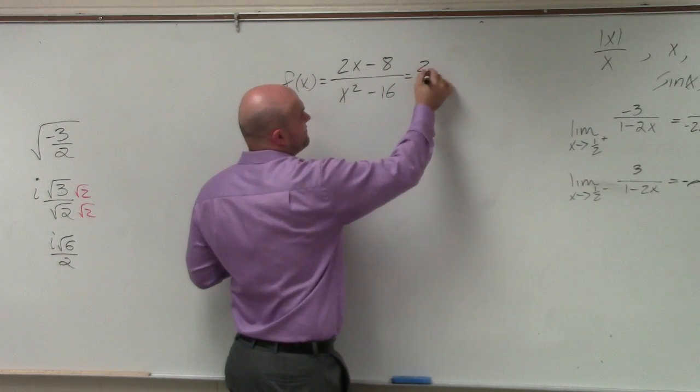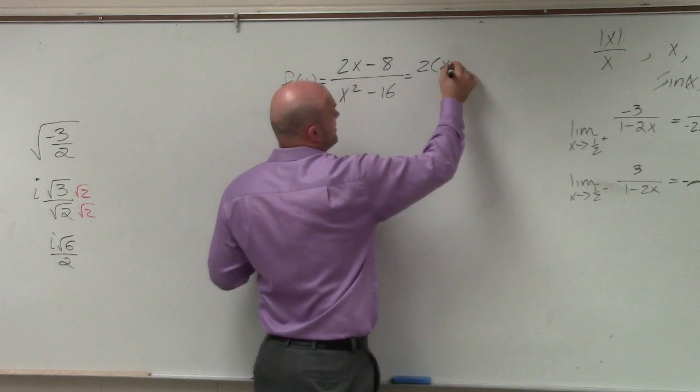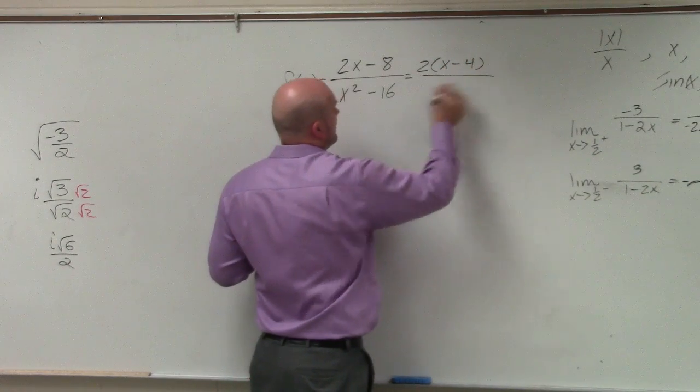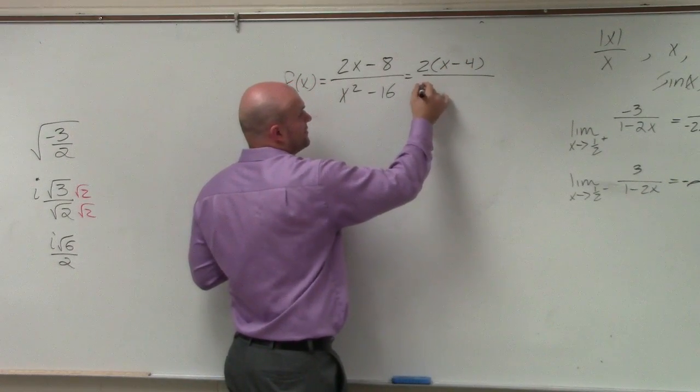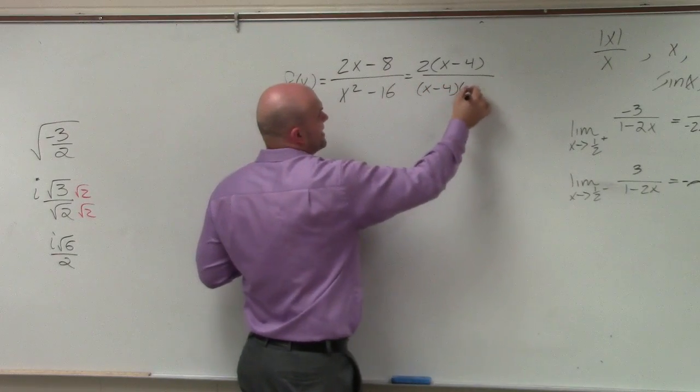So if I factor our numerator, I factor out a 2, I'm left with x minus 4. And if I factor out my denominator, I'm left with x minus 4 times x plus 4.